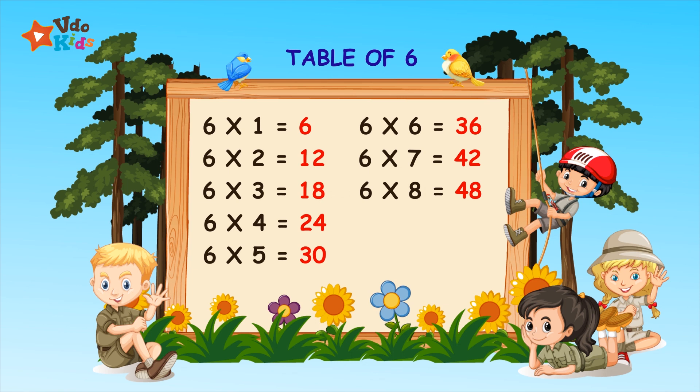Six eights are forty-eight. Six eights are forty-eight. Six nines are fifty-four. Six nines are fifty-four. Six tens are sixty. Six tens are sixty.